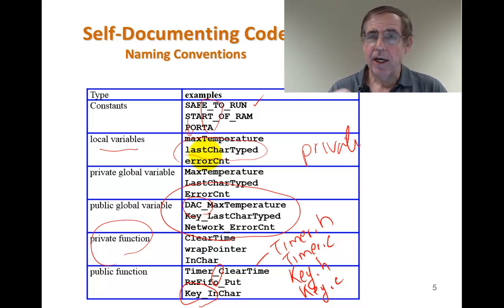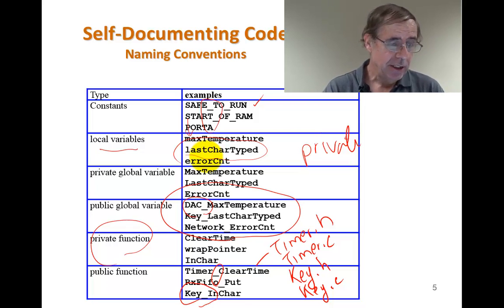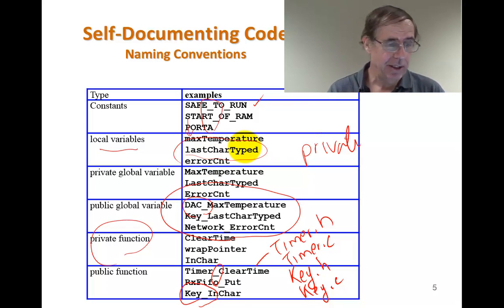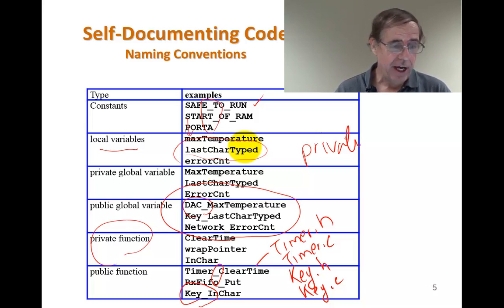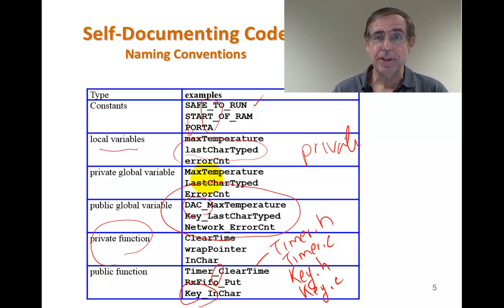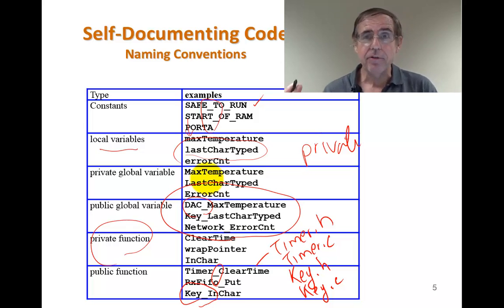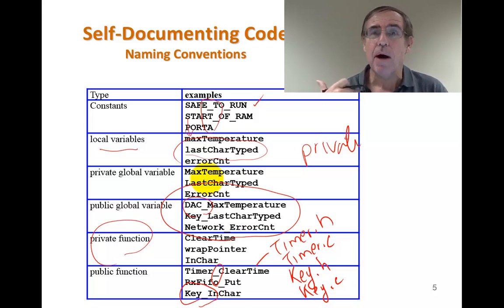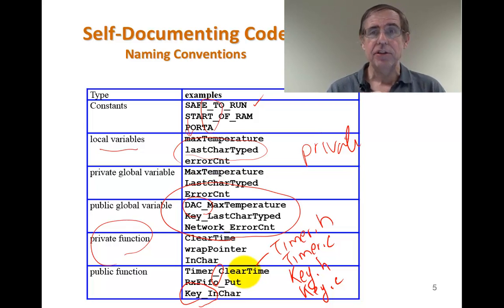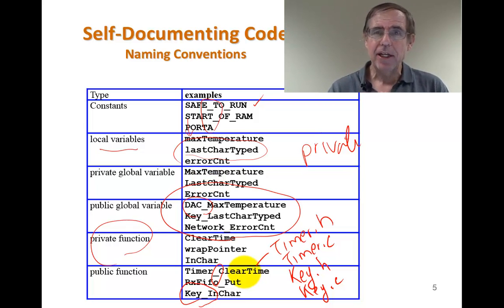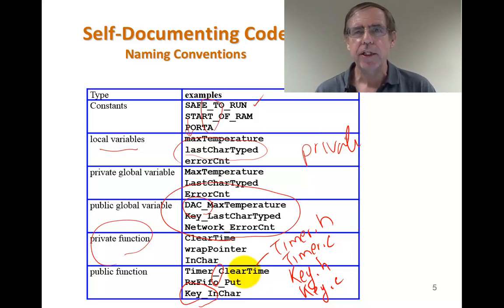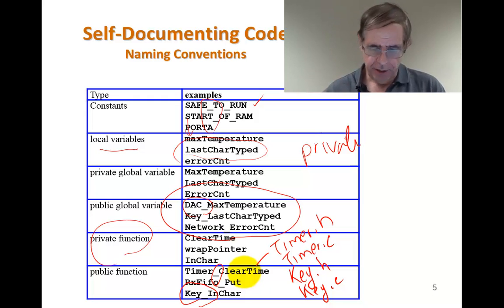The underline lets me visually see whether a function is private — a helper function with no underlines, callable only by others in that file — or public. I use camel case to concatenate multiple words without using the underline. So 'last character typed' is exactly that; 'error count' is the number of errors you've had; 'max temperature' is the largest temperature you've ever seen. In my opinion, those are very good variable names because the name itself tells you what it does — it clarifies the use.